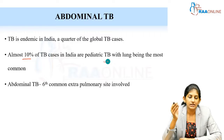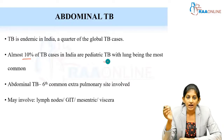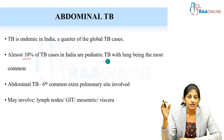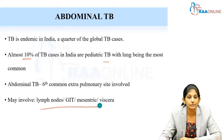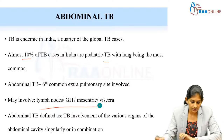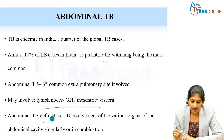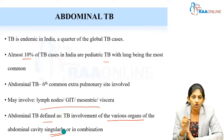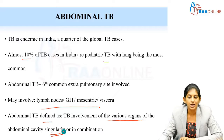Some studies quote that abdominal TB is around the sixth most common extra-pulmonary TB site involved. Tuberculosis of the abdomen involves either the lymph nodes, the gastrointestinal tract, the mesentery, or the viscera — or sometimes a combination of these four. Abdominal TB is defined as tubercular involvement of the various organs of the abdominal cavity, either singularly or in combination.